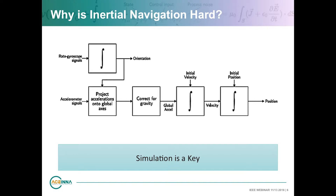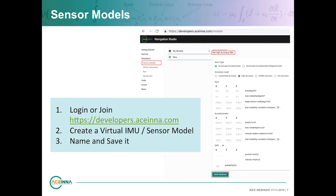Because outputs are related mathematically to inputs through a complex algorithm, it's hard to track down where errors are coming from. That really leads you to using simulation as a key step. So the first thing we're going to cover is how to do quick and efficient inertial navigation simulation using Acena's tools. Let's talk in detail about how to run effective inertial navigation simulation.